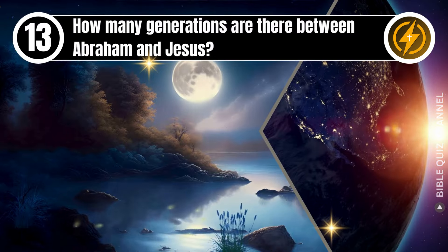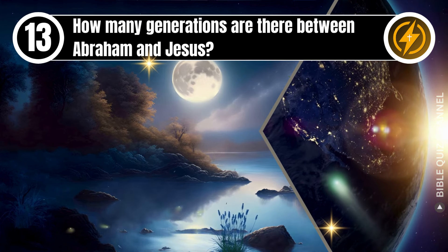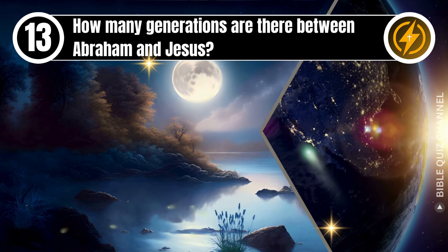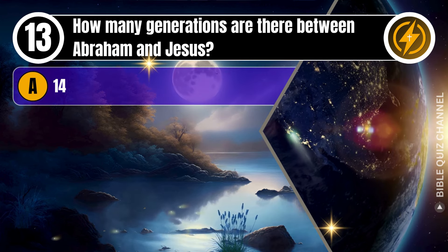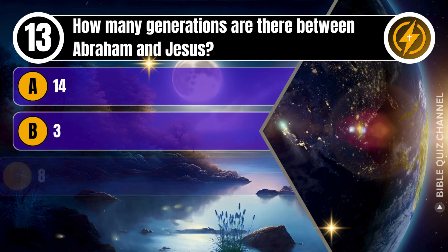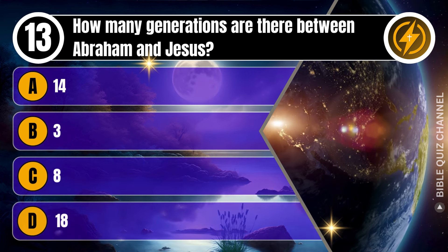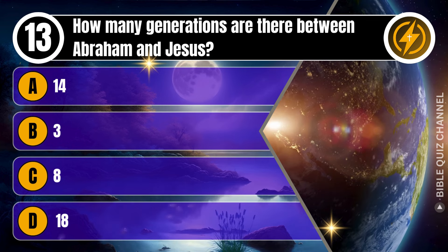Question 13. How many generations are there between Abraham and Jesus? A. 14. B. 3. C. 8. D. 18. You get 10 seconds.